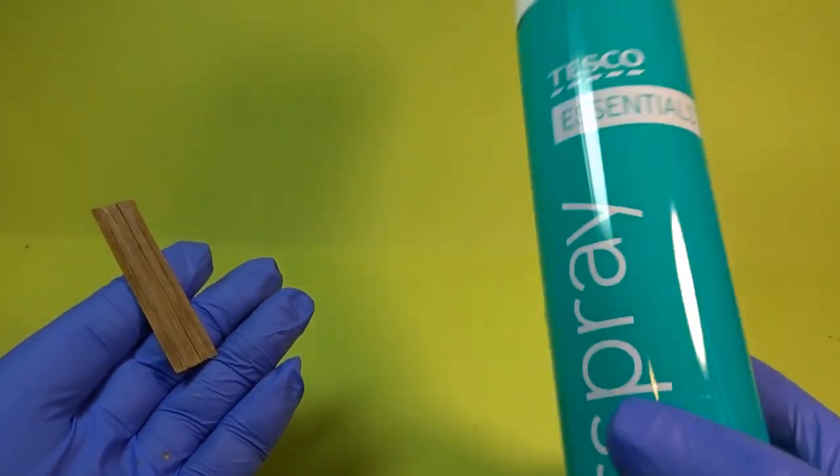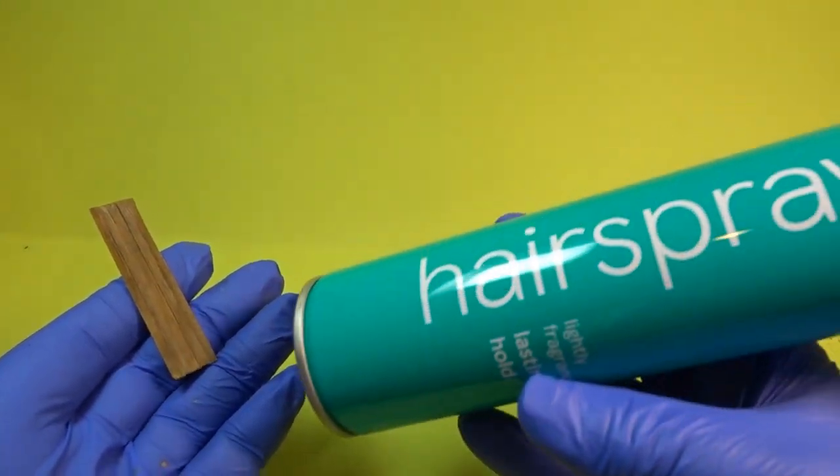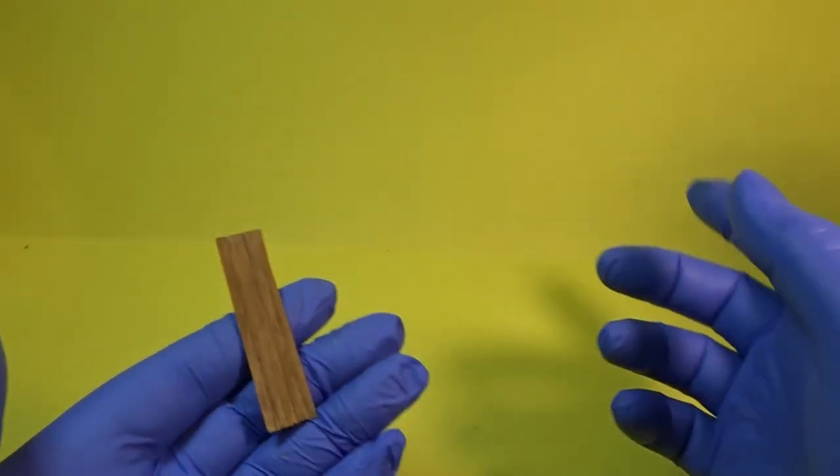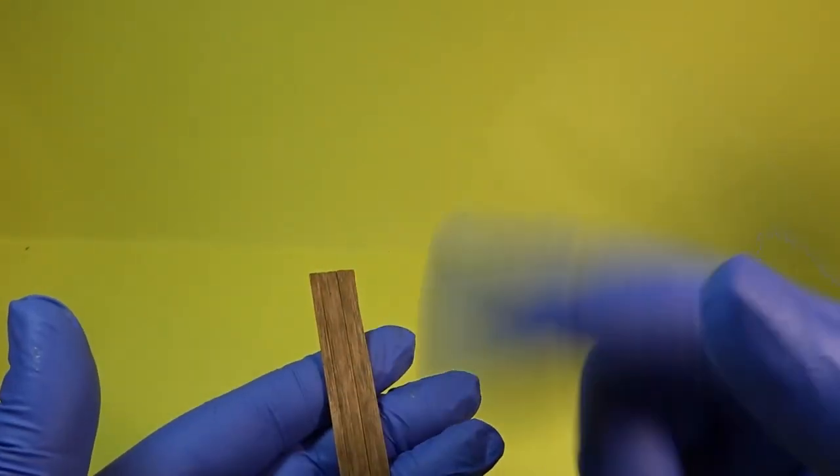So once that had all dried it was a matter of adding some varnish, some matte varnish. And once that was dry I then added some hairspray. Two coats were applied.